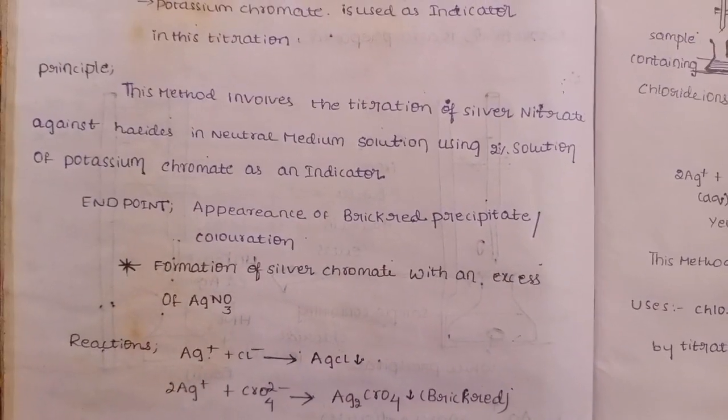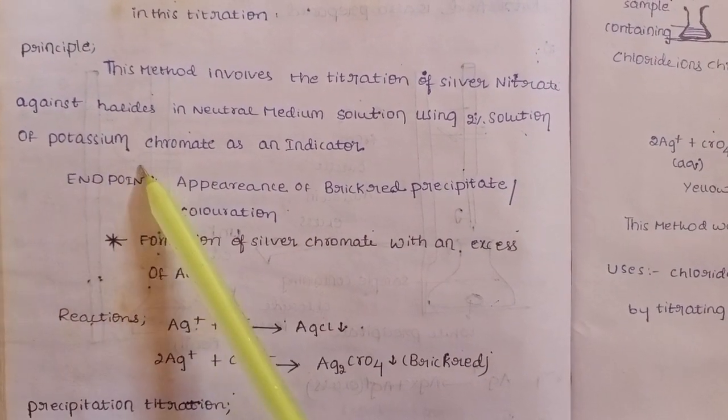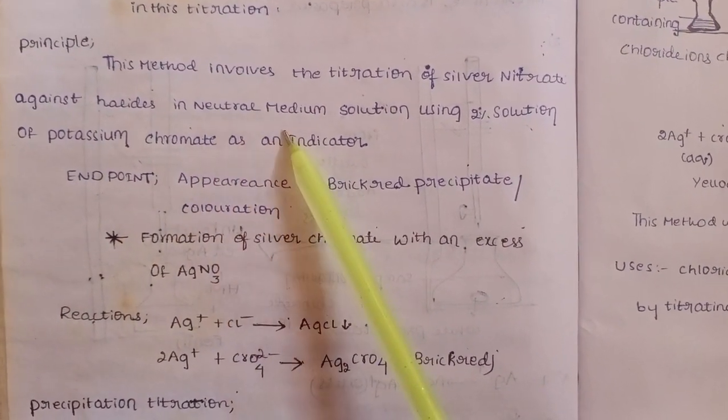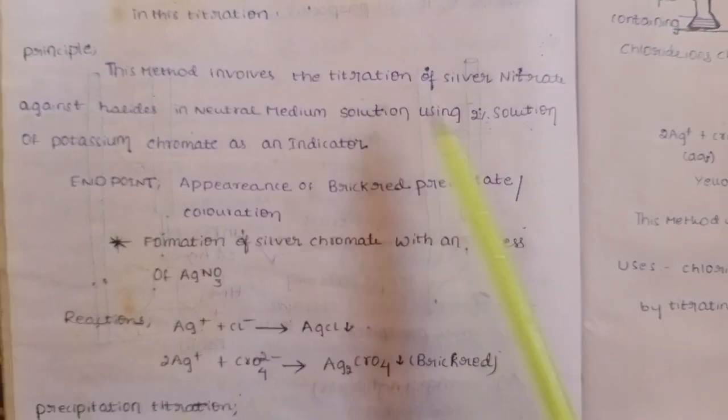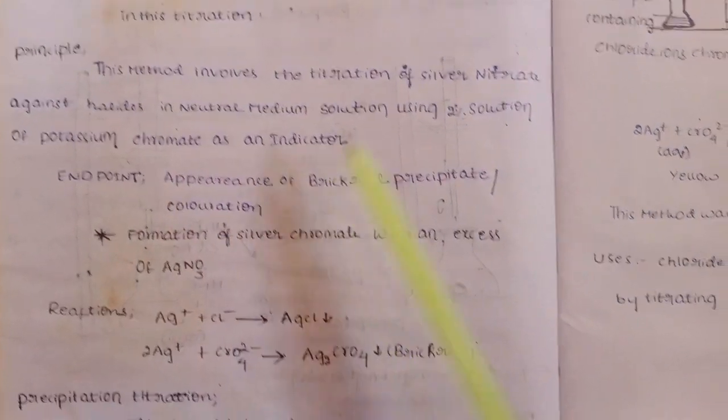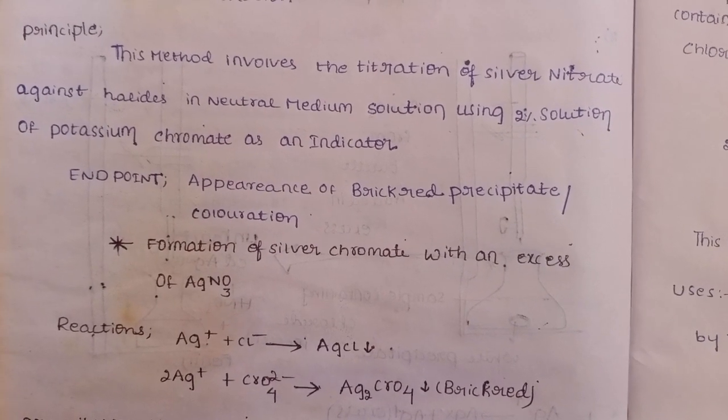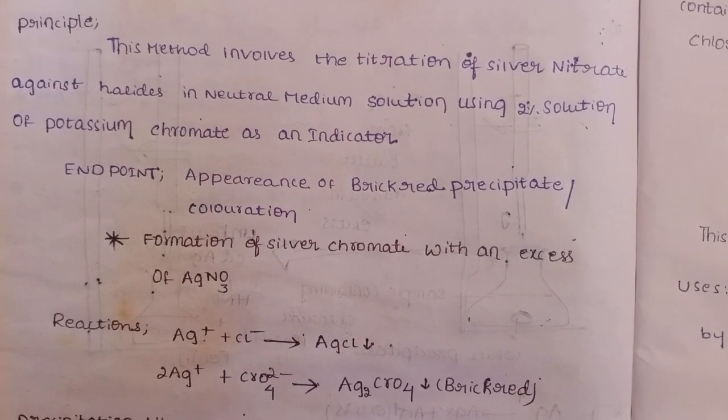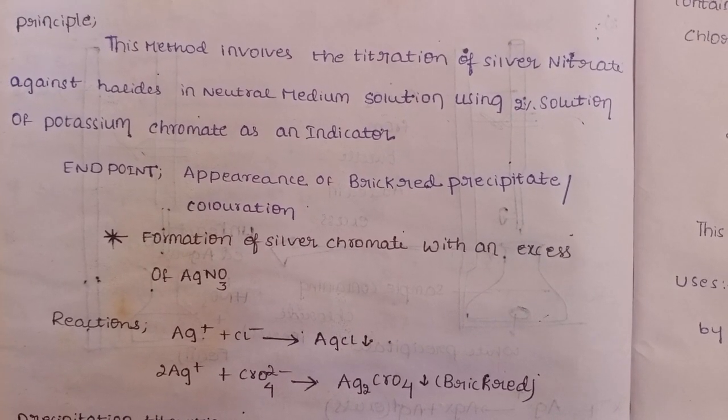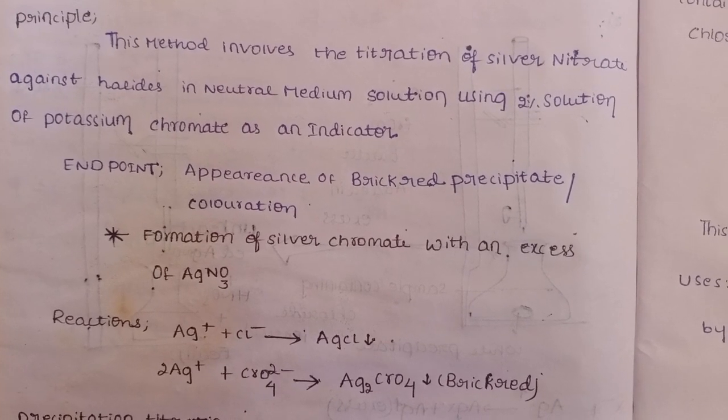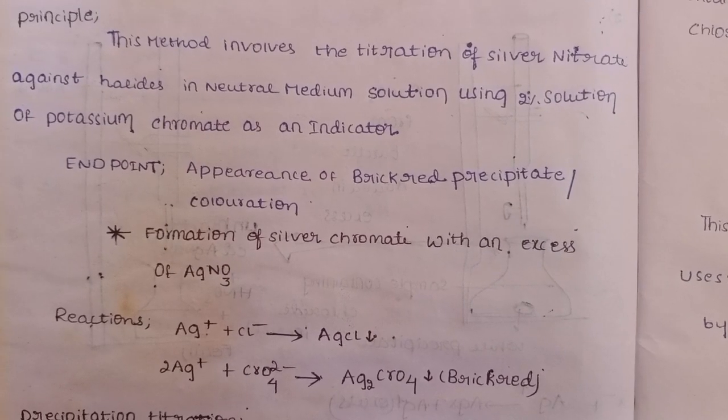This method involves the titration of silver nitrate against halides in neutral medium or weak basic medium solution, using a 2% solution of potassium chromate as an indicator. Silver nitrate (AgNO3) in the burette is titrated against halides - chlorine, fluorine, bromide, or iodine - in neutral or weak basic solution.